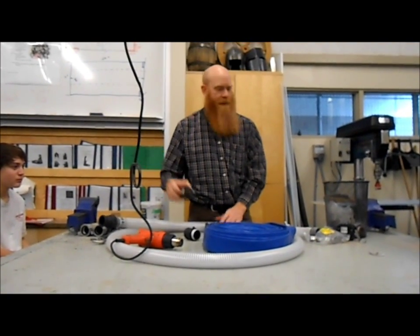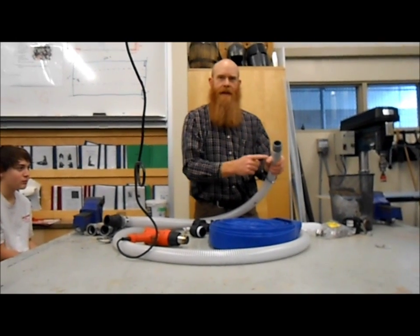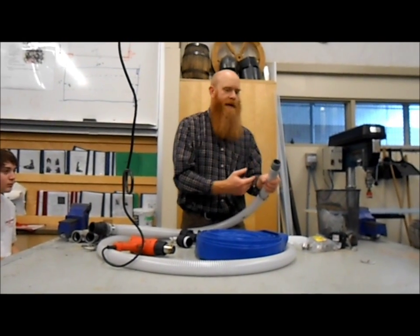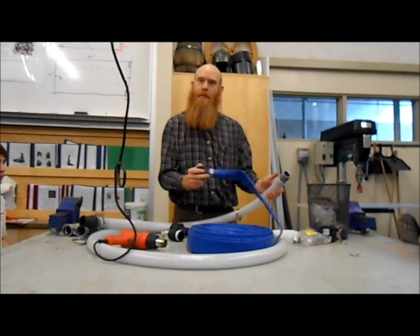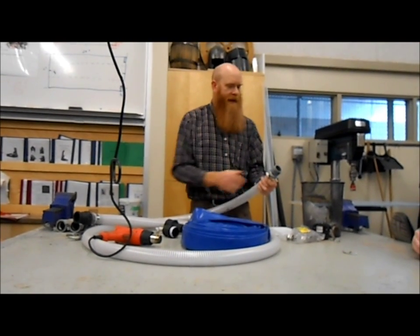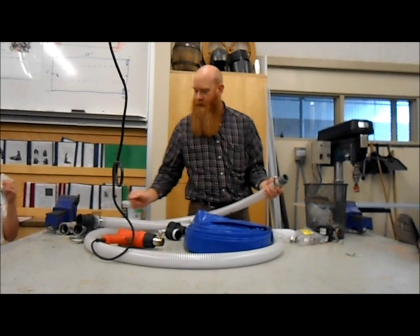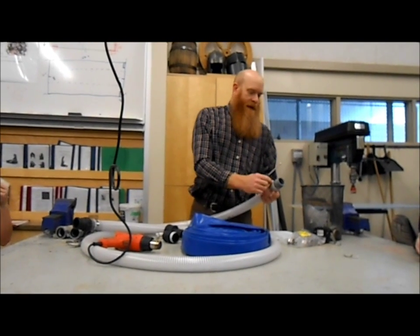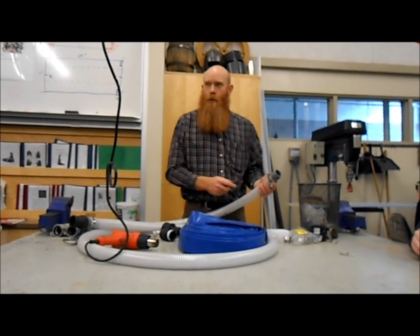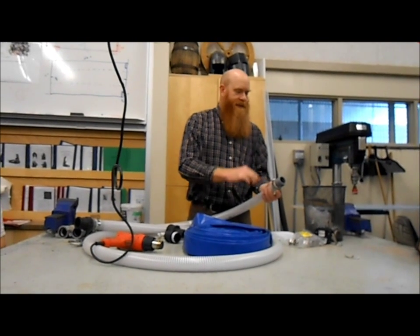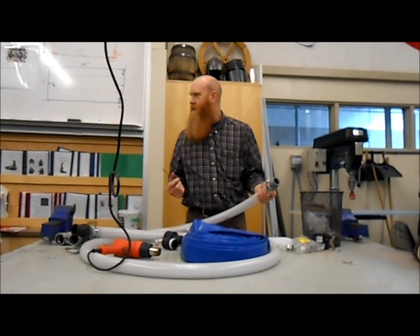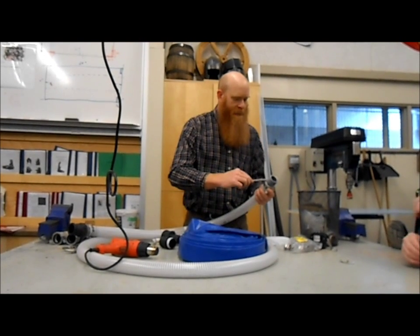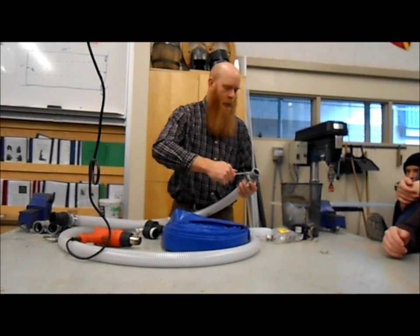Now, hose barbs aren't used by themselves. If I just stuck that in there, it would possibly leak a bit. Or if I had it on the pressure side, it would blow off. We have to use a pipe clamp on there to hold it in place so it doesn't go away. You can use two. Often people will put two pipe clamps side by side. It gives them a bit more protection against one failing or it's slipping off. But on most of my equipment, I just use one.